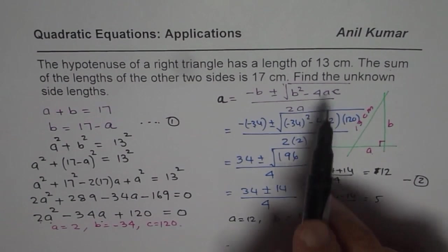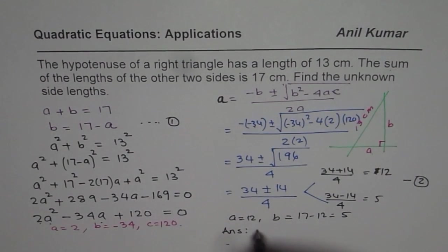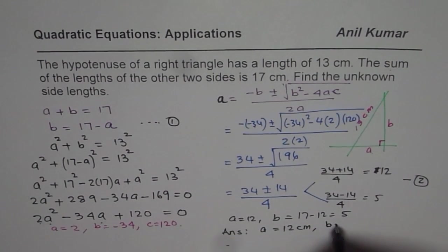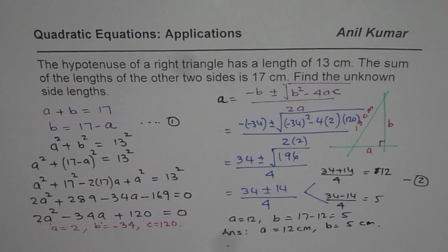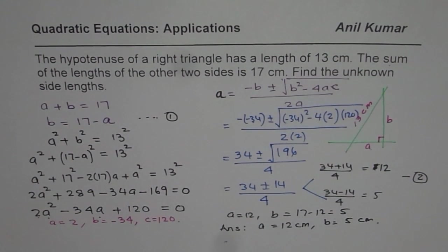So the answer for us is that the unknown sides are A equals to 12 centimeters and B equals to 5 centimeters. It is kind of important to write units at the end. Thank you and all the best.